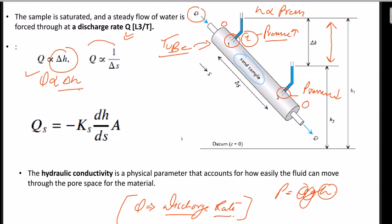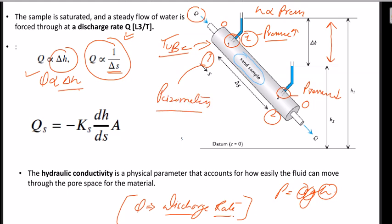The second conclusion was that Q is inversely proportional to delta S. Delta S is the distance between the two ends where pressure is measured by piezometers. He placed piezometers at both ends to measure pressure. Greater the distance, inversely proportional will be the discharge rate — meaning greater the length of the sample, lower will be the discharge rate.